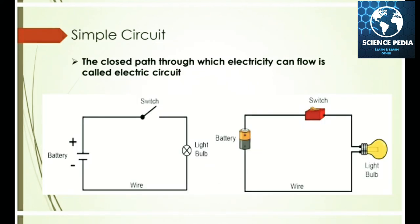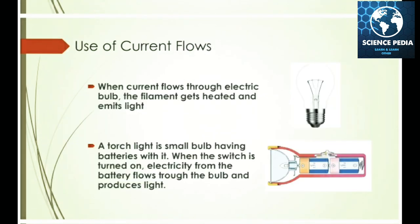Simple circuit: the closed path through which electricity can flow is called an electric circuit. Use of current flow: when current flows through an electric bulb, the filament gets heated and produces light.